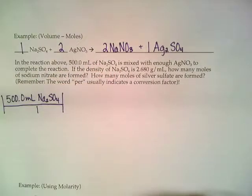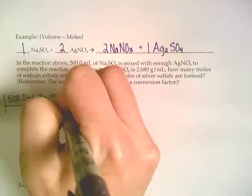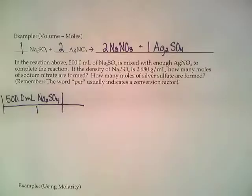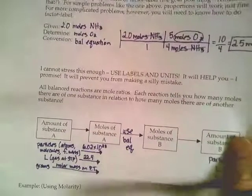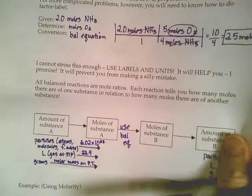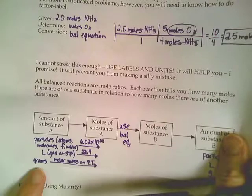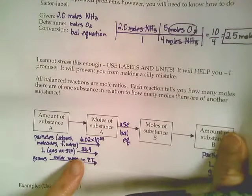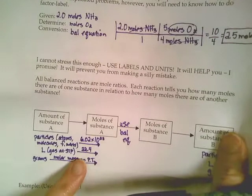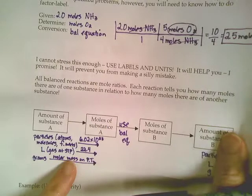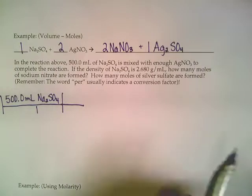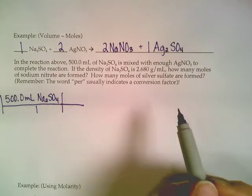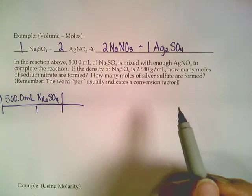So 500 milliliters of that sodium sulfate. We want those milliliters to cancel out and go away. Now we're trying to get our substance into moles. That's what the flowchart says to do. Now you can't use 22.4 in this problem because 22.4 only works for gases that are at STP, and sodium sulfate isn't a gas. That's an aqueous solution. So we have to get it into moles some other way.